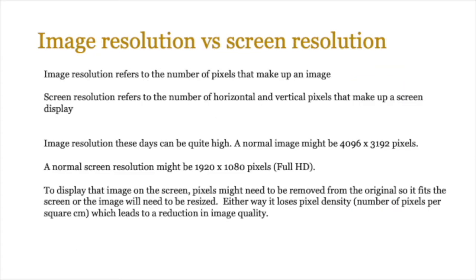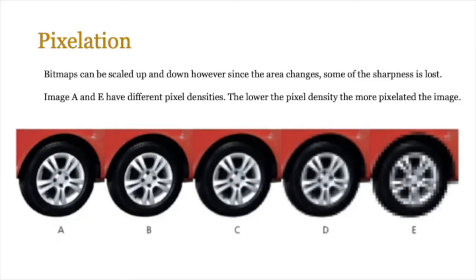Image resolution and screen resolution also have a clear impact on the way bitmap images are constructed. Image resolution refers to the number of pixels that make up an image. Screen resolution refers to the number of horizontal and vertical pixels that make up a screen display. Your screen display will have a limit — it could be high definition, 4K, or ultra HD. If your image resolution is higher than your screen resolution, the image can lose some fidelity, and it works the other way as well. If you have a lower image resolution and a high screen resolution, you'll see artifacts, or the processor might try to render the image to fill those gaps.